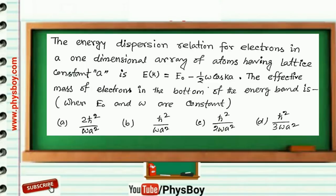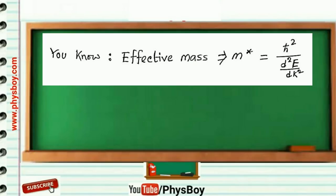You know effective mass M* is written as ℏ² divided by second-order derivative of energy with respect to K. As the energy expression is given, dE/dK = ½ωa sin(Ka).